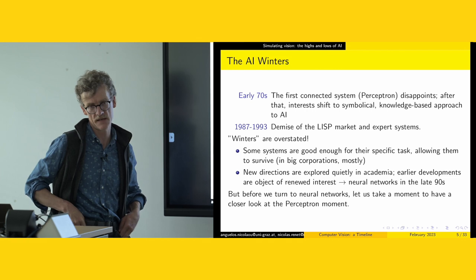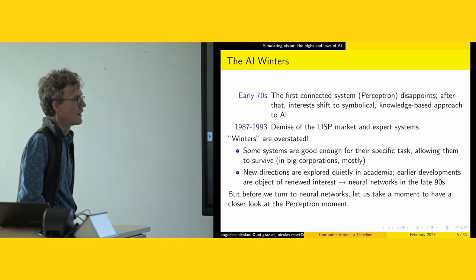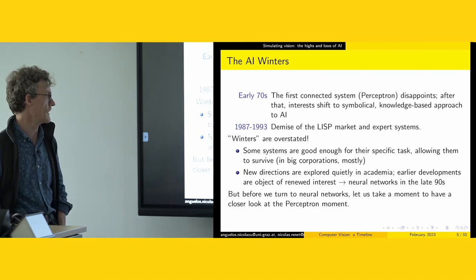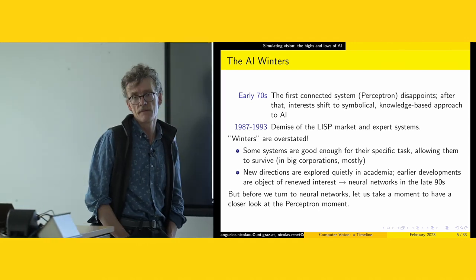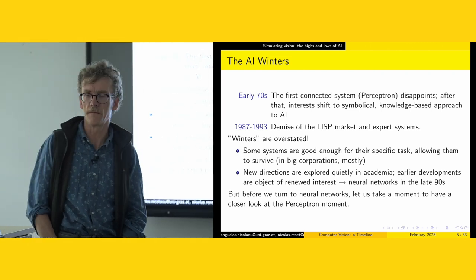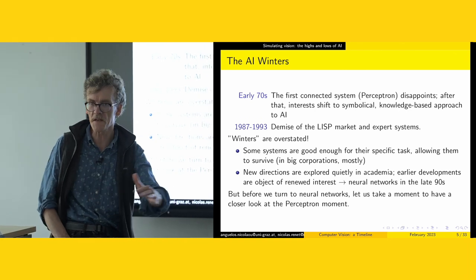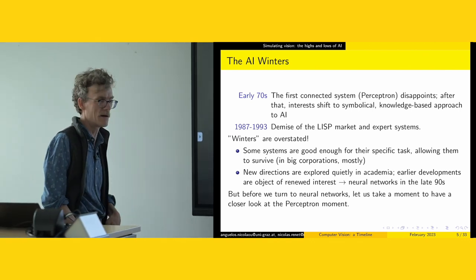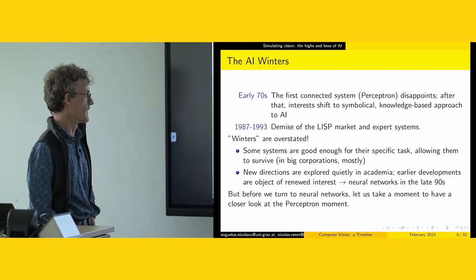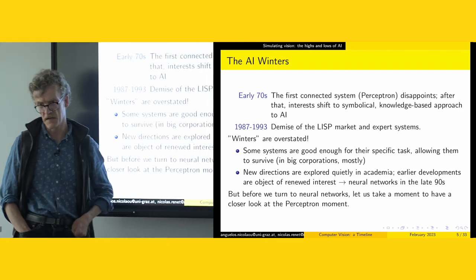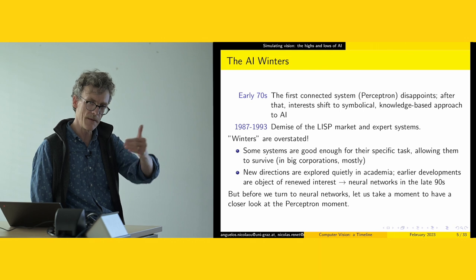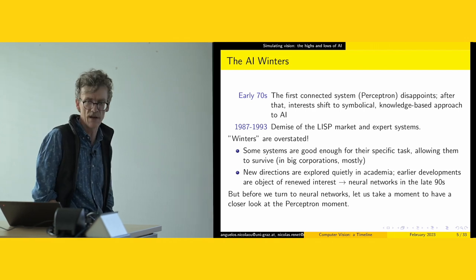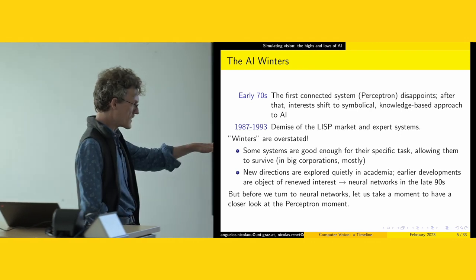Winters are usually largely overstated. Some systems that were born in that time were good enough for their specific task and survived, mostly in big companies. And it did not prevent people in academia to explore quietly new directions. Even if they did not have a lot of money, people were already able to build the milestones of what we would call the first really functional neural networks.